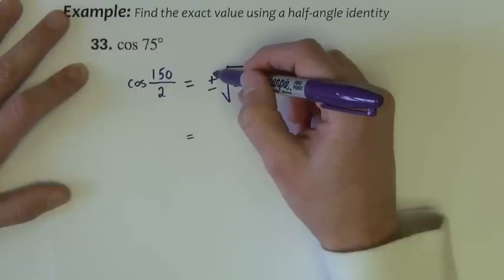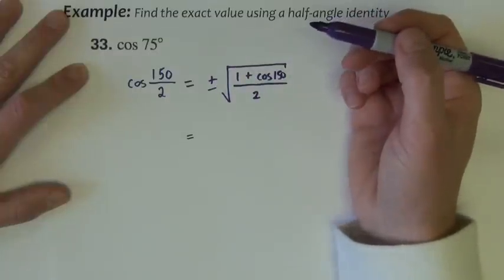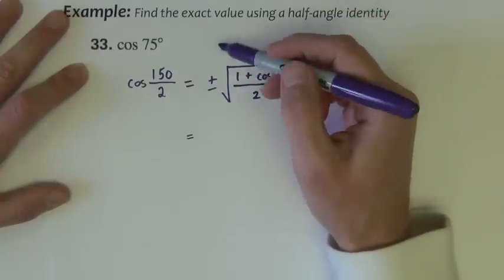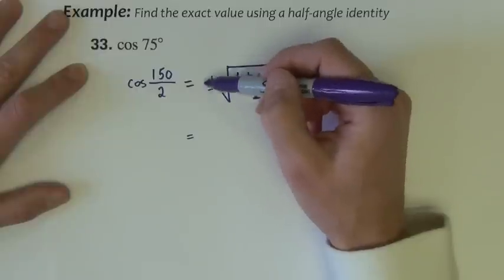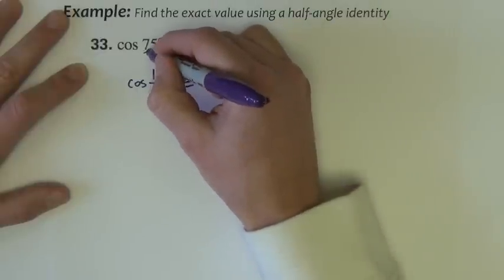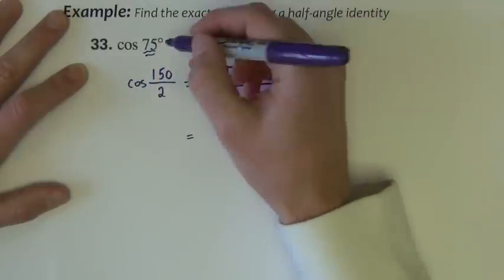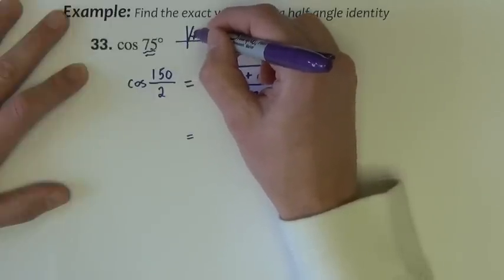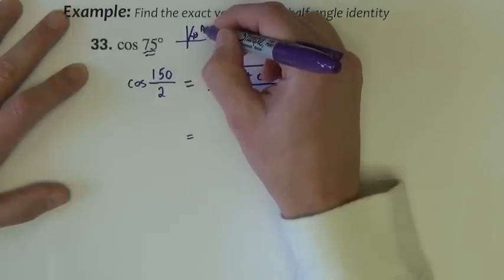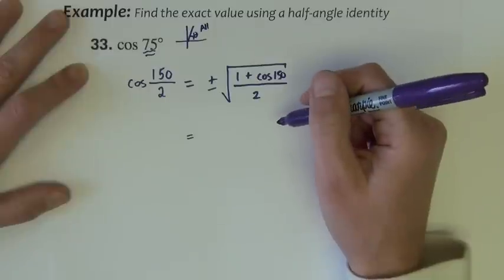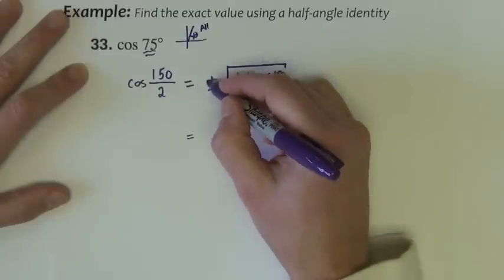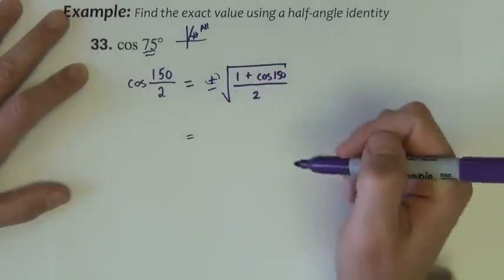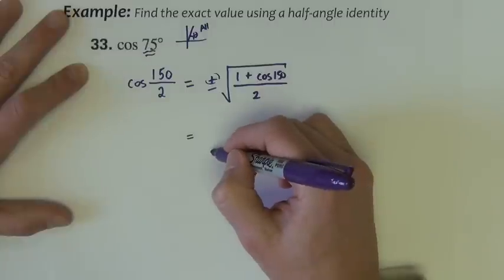We need to choose plus or minus. You can do that at the beginning, at the end, or anywhere in between. Since we're talking about 75 degrees, that is in quadrant 1. Recall all angles in quadrant 1 are positive, so we're going to want the positive here also. I'm going to go ahead and just drop the plus minus as dropping it will imply positive.